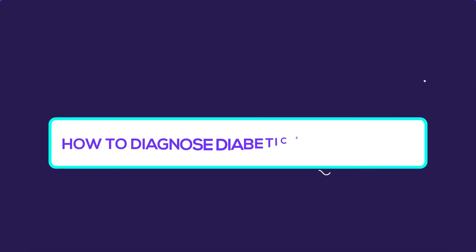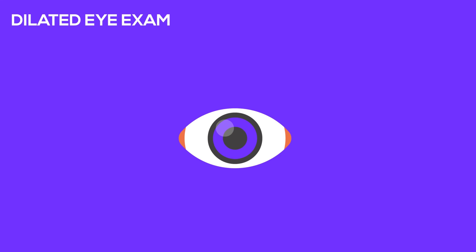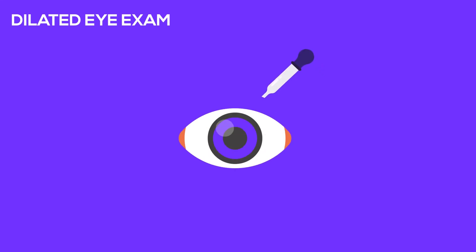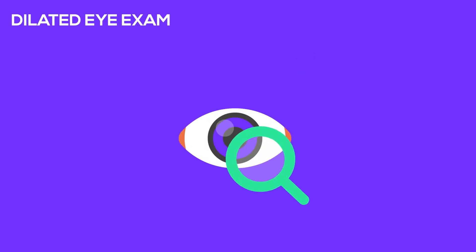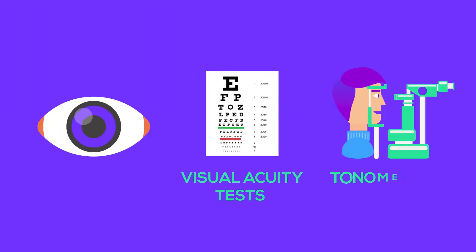How to diagnose diabetic eye diseases. Doctors perform a dilated eye exam to diagnose diabetic eye disease. First, your pupils will be dilated with eye drops. Then, they will have a good look at your retinas through a magnifying lens to identify characteristic features. They will also use other tests such as visual acuity tests and tonometry to aid the diagnosis.